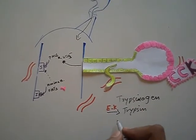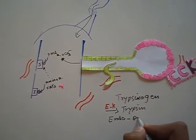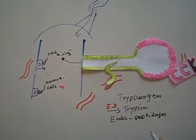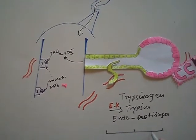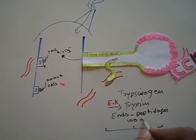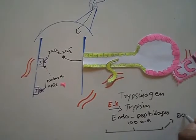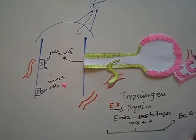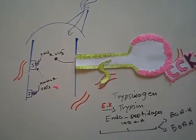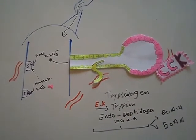These enzymes will work as endopeptidases. That means, if this is the amino acid chain and let's say it contains 100 amino acids, they will break it into 50 amino acids and 50 amino acids. So it will break it from inside the peptide chain, from the middle.